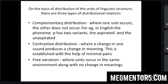Contrastive distribution: you can replace a sound with another sound so that it produces a change in meaning. Example — when you replace /k/ with /p/ in 'cat,' it becomes 'pat.' When you replace /t/ with /p/, 'cat' becomes 'cap.' This is called contrastive distribution. Minimal pairs have a change in only one sound — for example, 'cap' and 'cat,' or 'mat' and 'sat.'